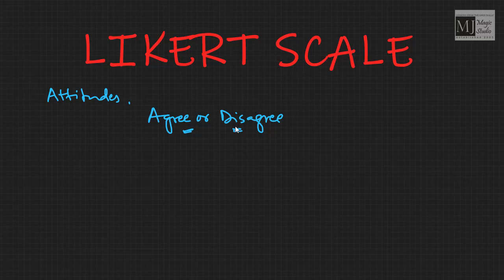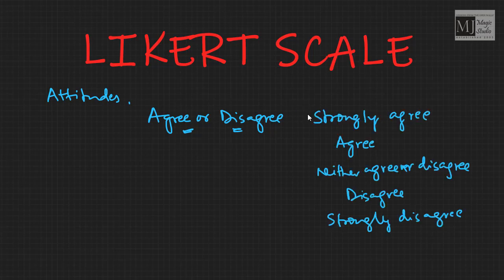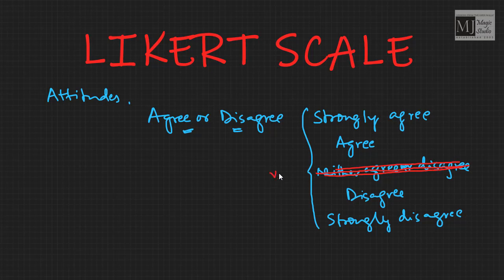Respondents generally choose from five different alternatives. A situation is given and then they are asked to mark on this five-alternative Likert scale. However, it is recommended by many not to use the 'neither agree nor disagree' option because marking it is very convenient and easy. If only four options are given, respondents are forced to present their actual attitude regarding that particular statement.